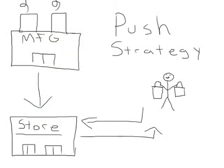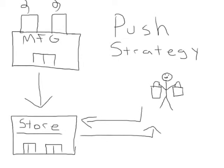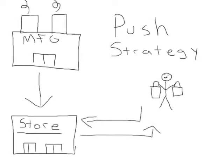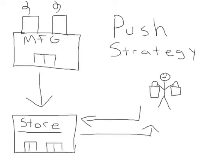Using a push strategy, businesses or manufacturers use their resources to sell to retailers and wholesalers who then promote and advertise to customers. For example, a company that makes computers would sell them to an electronics store. The store then produces commercials and circulars advertising the computers, and customers then go to that store to make their purchase.